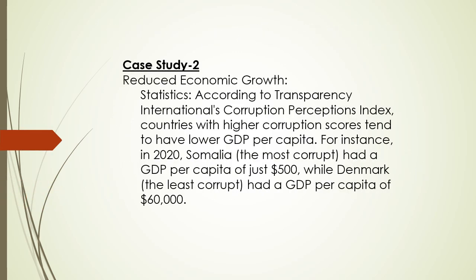Case Study 2 — Reduced Economic Growth. According to Transparency International's Corruption Perceptions Index, countries with higher corruption scores tend to have lower GDP per capita. For instance, in 2020, Somalia, the most corrupt country, had a GDP per capita of just $500, while Denmark, the least corrupt, had a GDP per capita of $60,000.